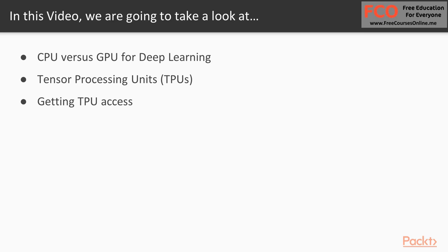Today is all about Tensor Processing Units, or TPUs for short. We'll start off by comparing the relative strengths and weaknesses of CPUs versus GPUs for deep learning, and then ease into Tensor Processing Units, going over the architecture and some interesting characteristics and benchmarks. Lastly, we'll wrap up with getting TPU access, which at this time is admittedly a bit limited.